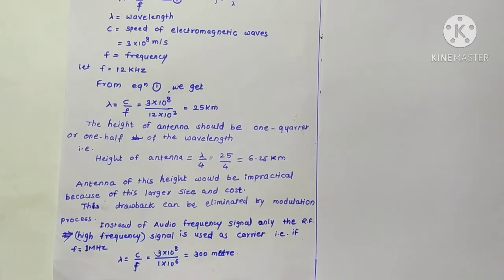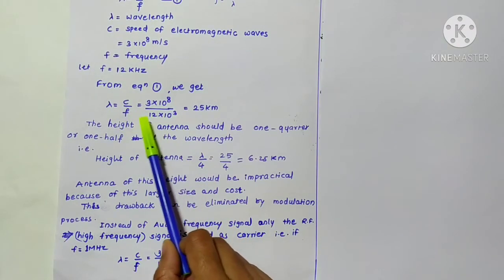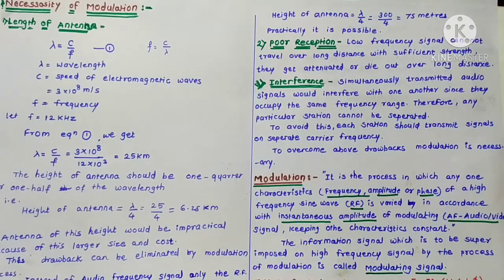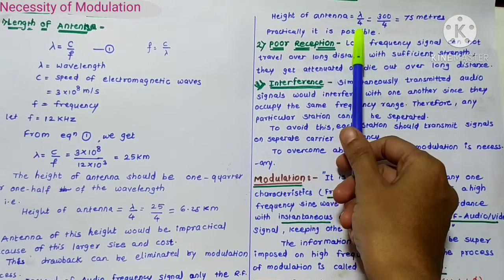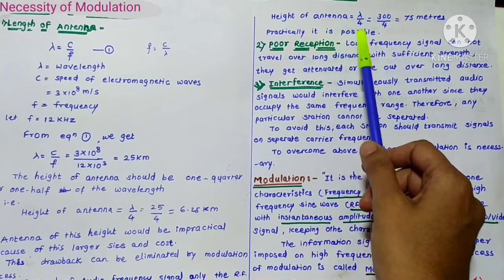In modulation, a high-frequency carrier signal carries the low-frequency audio signal over a long distance. Instead of using the audio frequency, we use a radio frequency signal, for example 1 MHz (1 × 10⁶ Hz). Then λ = (3 × 10⁸) / (1 × 10⁶) = 300 meters. The antenna height would be λ/4 = 300/4 = 75 meters, which is practically possible.